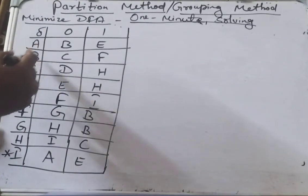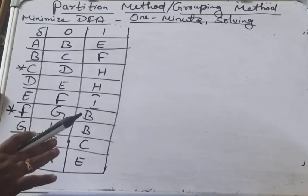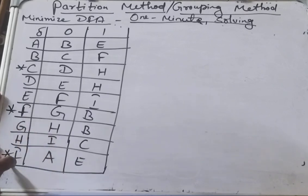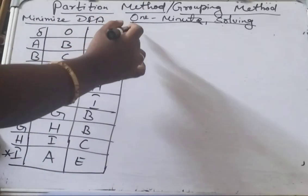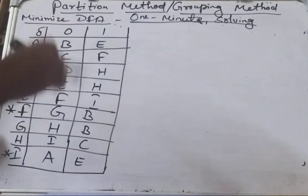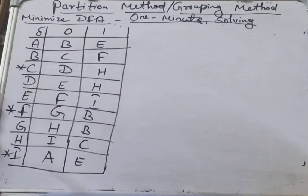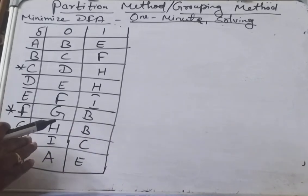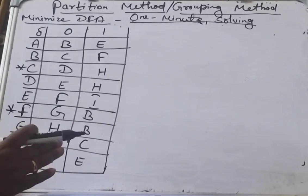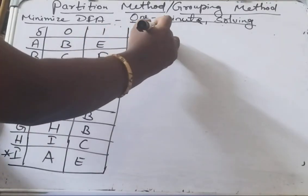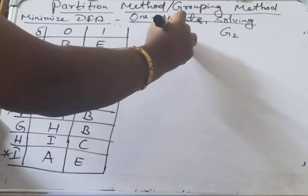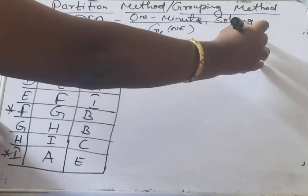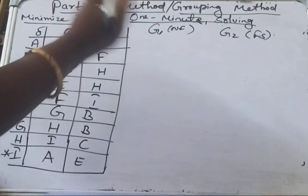I'm not following the table filling method procedure here, as I have already done that in previous videos. This is how to identify the one-minute solution for minimization of DFA without identifying subsets. The first step is to partition into final and non-final states — group them into G1 and G2. G1 contains all non-final states and G2 contains all final states.